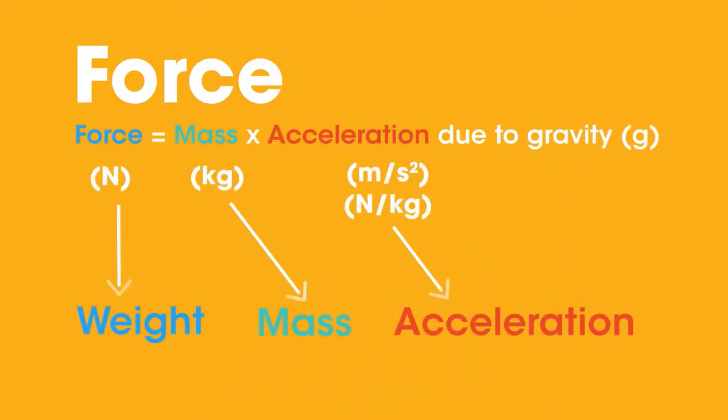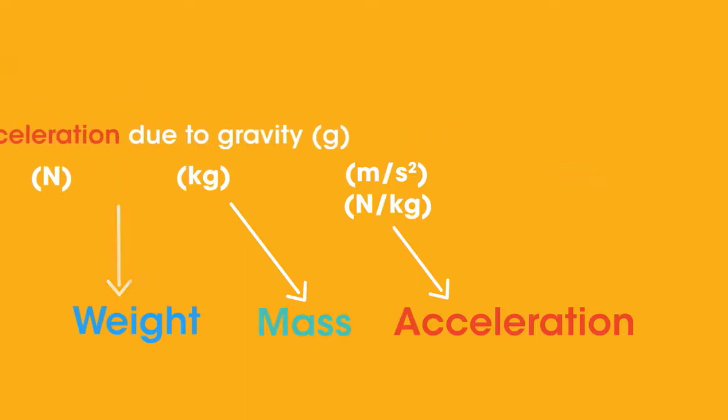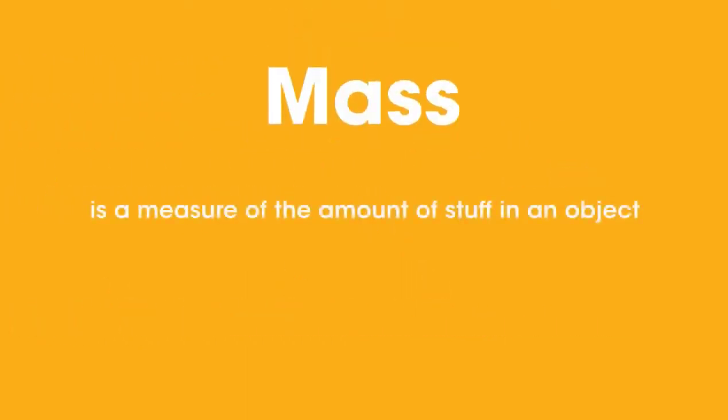Remember this. And on Earth, g equals 9.81 meters per second per second, or approximately 10 meters per second per second. Okay, back to mass and weight. Remember that mass is a measure of the amount of stuff in an object, and gives a measure of how difficult it is to get moving or to stop it. It never changes.